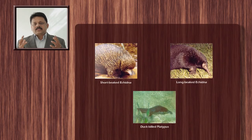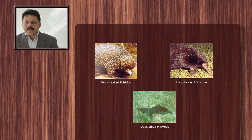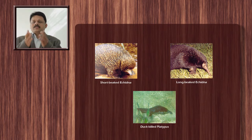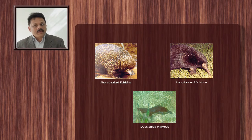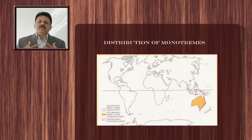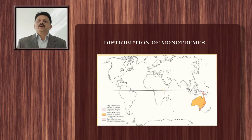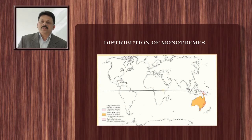Some examples of Monotremes include the short-beaked echidna and the long-beaked echidna. Out of the five species, four are echidnas and one is the platypus — specifically the duck-billed platypus, of which there is only one species. With regard to distribution, Monotremes as a group are confined to the continent of Australia, New Zealand, and part of Papua New Guinea.